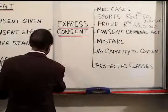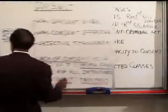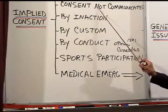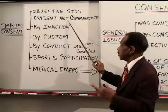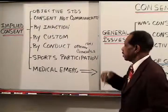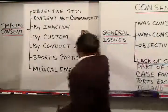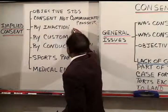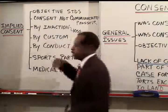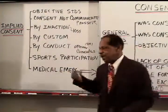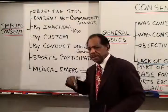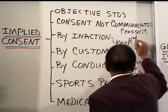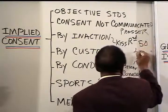For implied consent: if the person has subjectively given their consent, it doesn't matter that it wasn't communicated to the actor — Prosser is the citation for that. The inaction case — the kiss case where the boy was sitting by the girl on the park bench, said 'I'm going to kiss you,' she did not respond and he did it anyway — that is from Restatement Second, section 50, illustration 2.